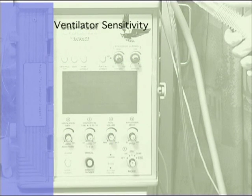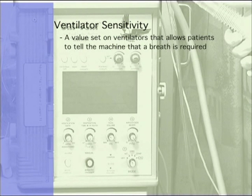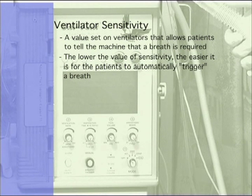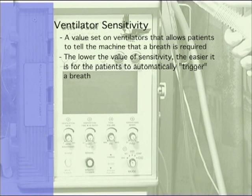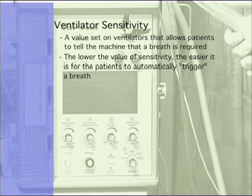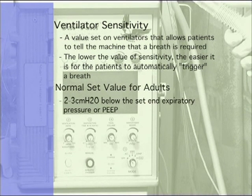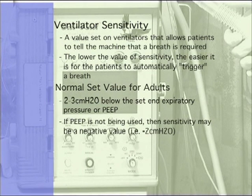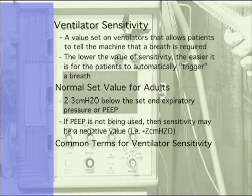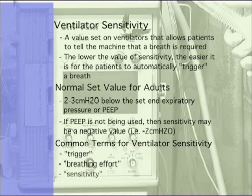Ventilator sensitivity. Ventilator sensitivity is a value set on the ventilator that allows patients to tell the machine that a breath is required. The lower the value of sensitivity, the easier it is for patients to automatically trigger a breath. If not automatically determined by the ventilator, sensitivity is set as low as possible but not so low as to allow the ventilator to trigger automatically. Usually the set value for an adult is 2 to 3 centimeters of water below the set end expiratory pressure. If there is no end expiratory pressure, sensitivity may be a negative value. Ventilator sensitivity may also be known as trigger, breathing effort, or simply sensitivity.